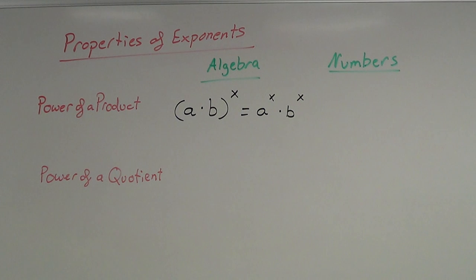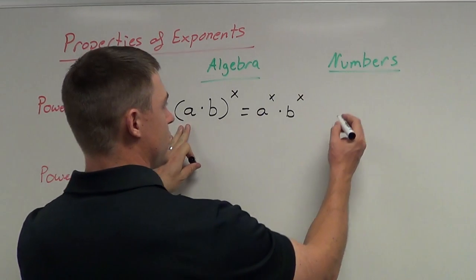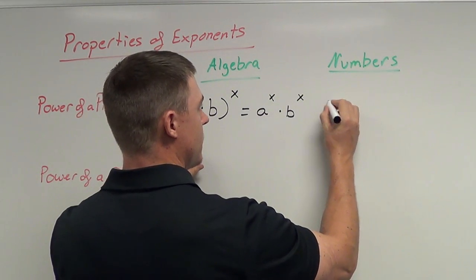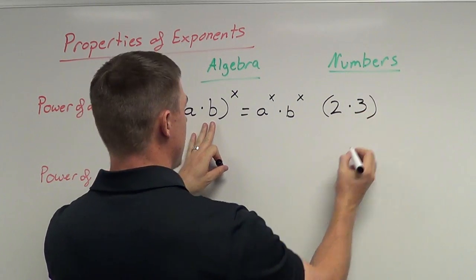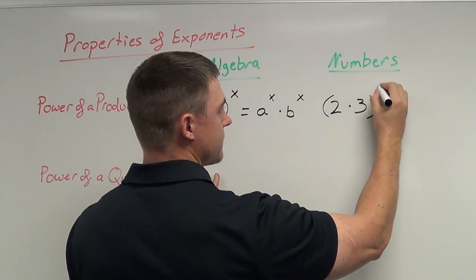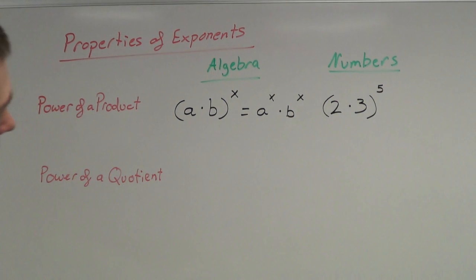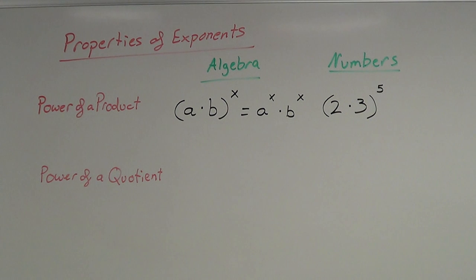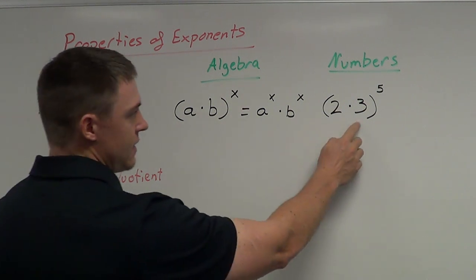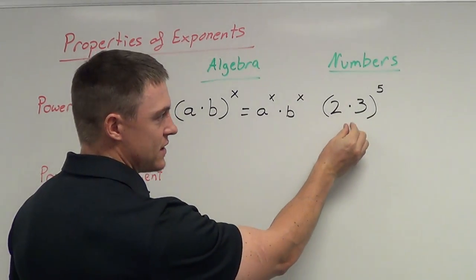Now let's do that with numbers. For a I'll choose 2, for b I'll choose 3, and for x I'll choose 5 — just to keep the numbers simple. One of the first things you notice is that you see 2 times 3 inside parentheses. You can just do that first — take 2 times 3, make that 6, and then this would be 6 to the fifth power, and you wouldn't have to distribute the x.